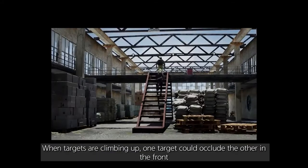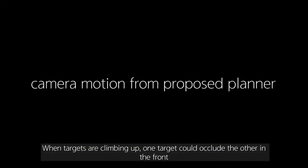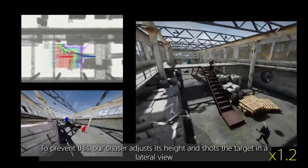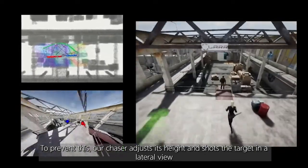When targets are climbing up, one target could occlude the other in the front. To prevent this, our chaser adjusts its height and shoots the target in a lateral view.